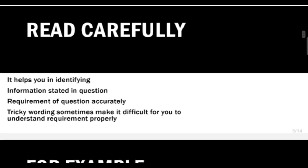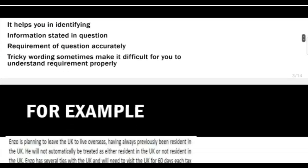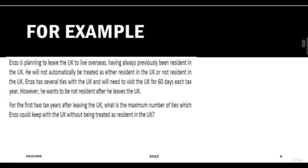First tip is to read carefully. It helps you in identifying information stated in the question and the requirement of the question accurately. Tricky wording sometimes makes it difficult for you to understand the requirement properly. So this is an example of a question which has a different type of wording.